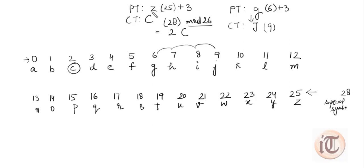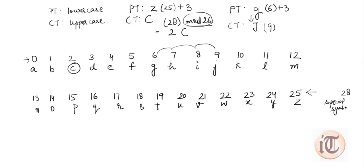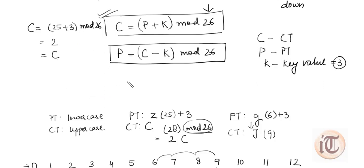By convention, plain text is always written in lowercase and ciphertext is always shown in uppercase. That is why plain text is written as small z and ciphertext is capital C. To verify using the formula: C = (25 + 3) mod 26 = 28 mod 26 = 2, and position 2 gives ciphertext capital C.